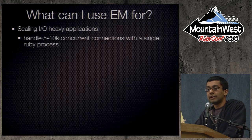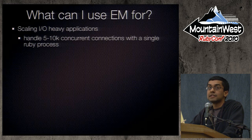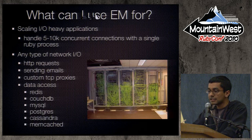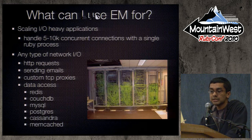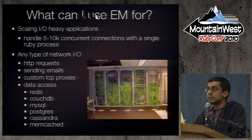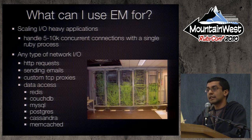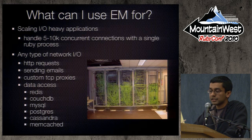EM is really good at scaling I/O heavy applications. In production, EM can easily handle 5,000 to 10,000 concurrent connections with just one single Ruby process. This applies to really any type of network I/O — sending emails, making HTTP requests, writing custom TCP proxies. People have written proxies in front of MySQL or Memcache, and a lot of times people use it for data access, since that can be pretty slow with expensive queries.